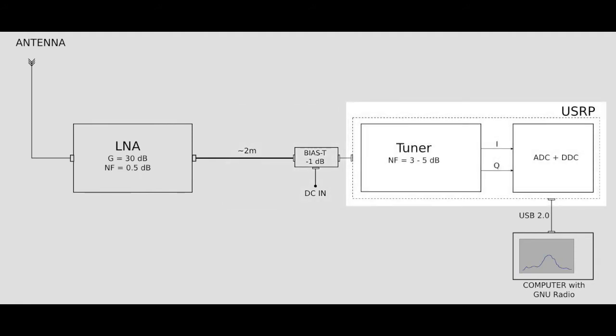After that I have the USRP, the Universal Software Radio Peripheral, which contains an RF tuner that converts the high frequency to a low frequency baseband, then converts it to digital signals via ADC and a digital down converter. After that the digital signal is sent to a PC running GNU radio for software, and that's where we do the analysis of the signal.